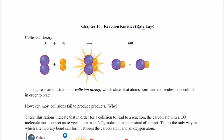We're going to begin by talking about something called the collision theory. The collision theory is basically what it says: in order for two molecules or two atoms to react, they must bump into each other — they must collide. So if I expect molecule A₂ to react with molecule B₂, they have to collide.